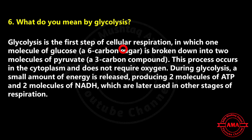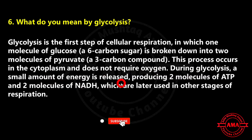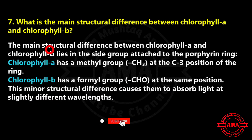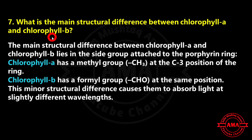It functions to transfer electrons from high-energy molecules like NADH or FADH2 through a sequence of carriers, releasing energy at each step. This energy is used to pump protons across the membrane, creating a proton gradient that drives the synthesis of ATP through chemiosmosis. Next: what do you mean by glycolysis? Glycolysis is the first step of cellular respiration in which one molecule of glucose is broken down into two molecules of pyruvate.